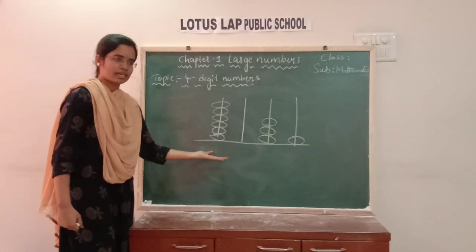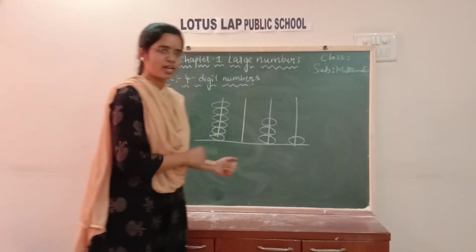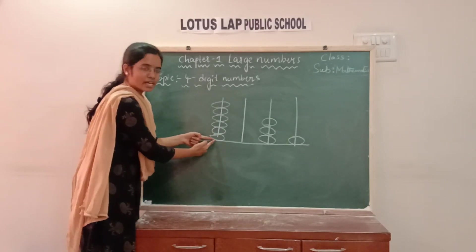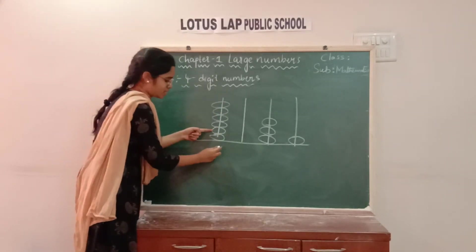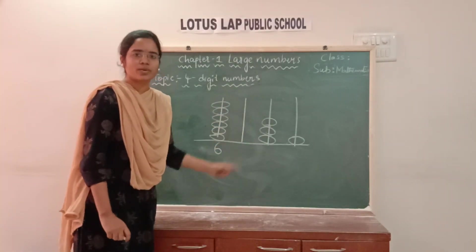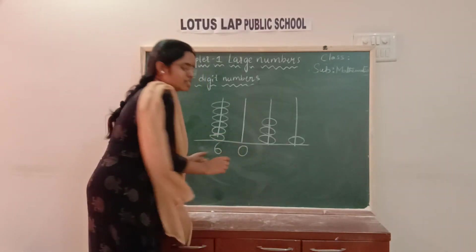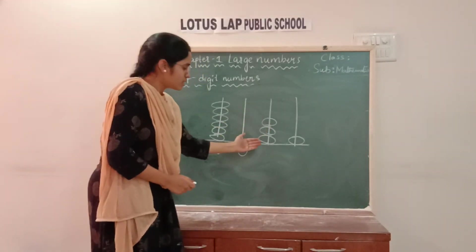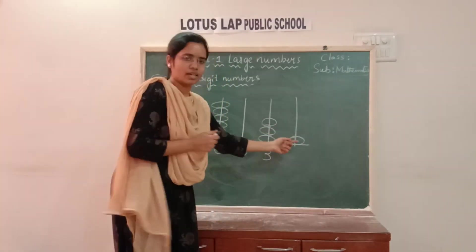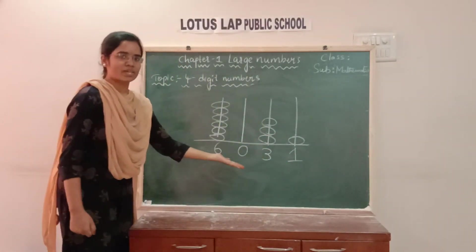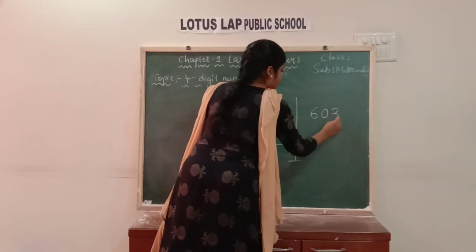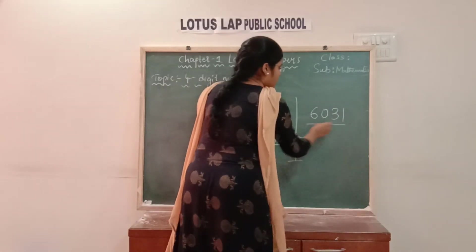One more example. Now we need to count the bits present in the first line: one, two, three, four, five, six — the value is six. On the second line, nothing is there. If there is nothing, we consider it as zero. Next: one, two, three — three bits, so the value is three. Last: one bit, so the value is one. Here is our 4-digit number: 6031.